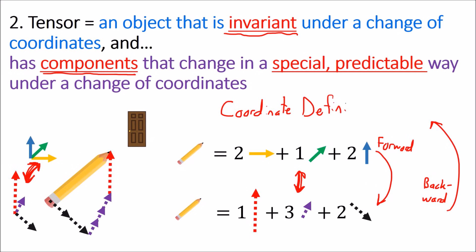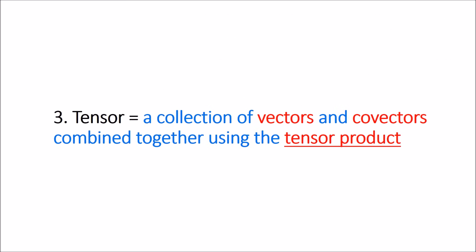And this definition is actually pretty good. It does get to what the heart of a tensor is. It's an object that's invariant, but whose components change. But it turns out that we can come up with an even better definition.